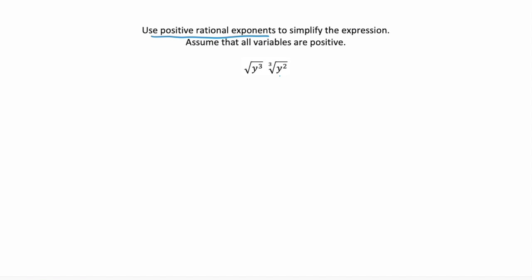So first we want to rewrite each of these radical expressions as exponents. Now remember when you have a radical, so we have the square root of x or the nth root of x, n is our index, this is rewritten in exponent form as 1 over n. It's always the radicand to the power of 1 over n, the index of that radical.